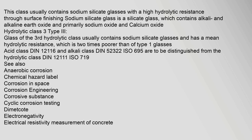The standard procedure ISO 719 describes a test of the extraction of water-soluble basic compounds under neutral conditions: 2 grams of glass with particle size 300 to 500 micrometers is kept for 60 minutes in 50 milliliters of deionized water of grade 2 at 98°C. Results are given as the amount of 0.01 M HCl needed to neutralize extracted basic oxides, expressed as extracted sodium oxide equivalent (μg). Hydrolytic class 1 (HGB 1 < 0.1 ml) usually contains sodium silicate glasses with high hydrolytic resistance through surface finishing. Hydrolytic class 3 (type 3 glass) usually contains sodium silicate glasses and has a mean hydrolytic resistance two times poorer than type 1 glasses. Acid class DIN 12116 and alkali class DIN 52322 / ISO 695 are to be distinguished from the hydrolytic class DIN 12111 / ISO 719.